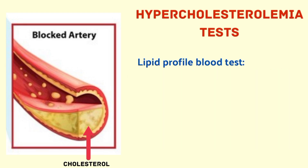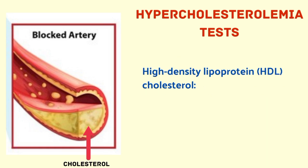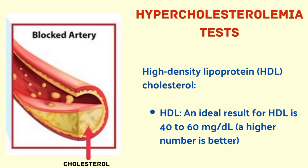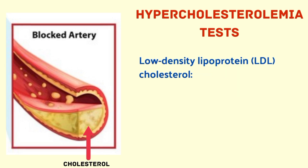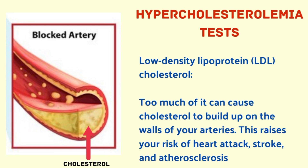The first test is the lipid profile test. A complete cholesterol test, also called a lipid panel or lipid profile test, measures the levels of lipids or fats in your blood. It primarily measures HDL cholesterol — referred to as good cholesterol because it helps remove LDL cholesterol from your blood. An ideal result for HDL is 40 to 60 mg per deciliter; a higher number is better.